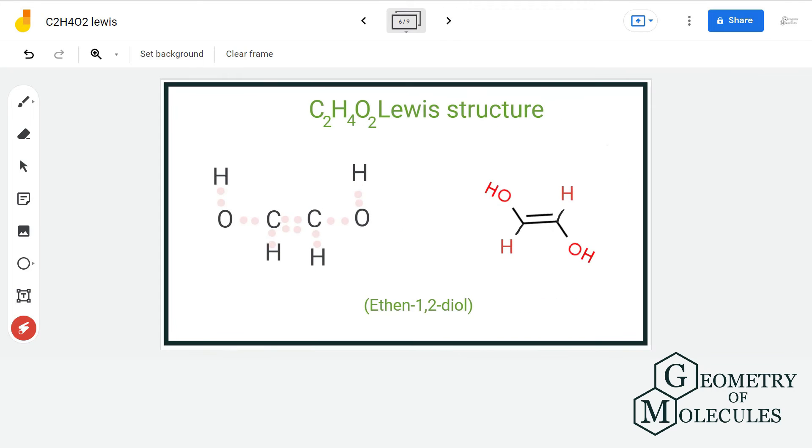The next isomer is of the functional group alcohol that contains an OH functional group. This is the Lewis structure of ethene 1,2 diol and this is its structure.